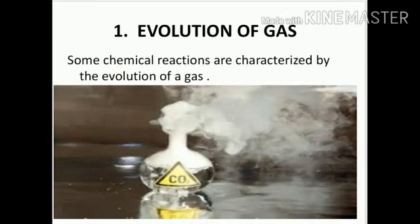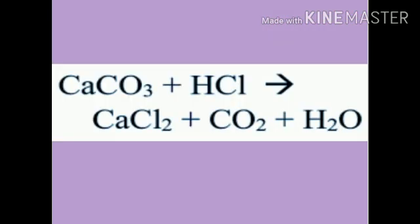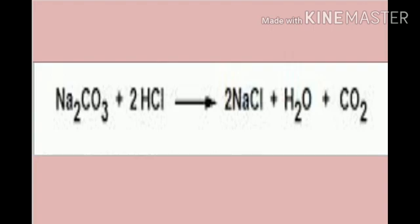In the last lecture, we had studied about those chemical reactions which were characterized by evolution of gas. For example, when we added ethanoic acid to sodium carbonate, we got sodium ethanoate, carbon dioxide and water. Carbon dioxide evolved as a gas. The second equation was when HCl was added to calcium carbonate — powdered chalk — we got calcium chloride, carbon dioxide and water. The next example was when we added concentrated hydrochloric acid to sodium carbonate; the products were sodium chloride, water and carbon dioxide gas.